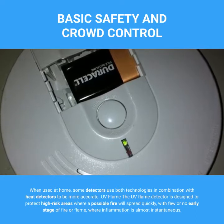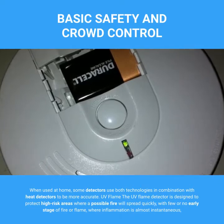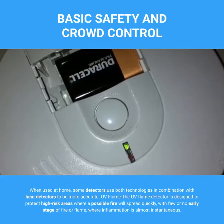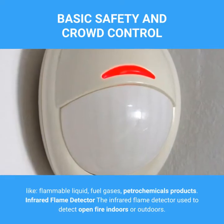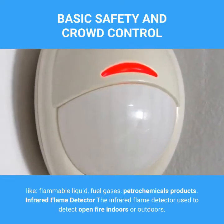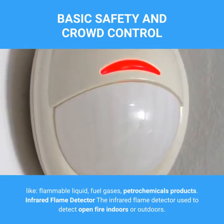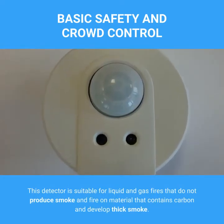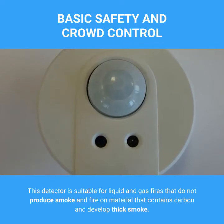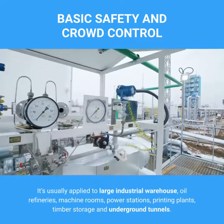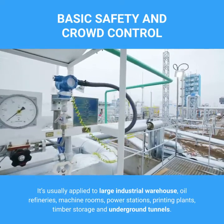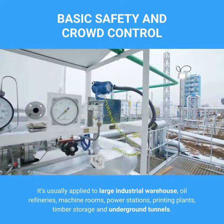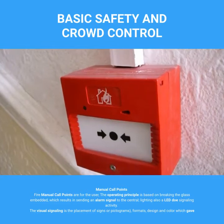UV flame detector: The UV flame detector is designed to protect high-risk areas where a possible fire will spread quickly, with few or no early stages of fire or flame, where inflammation is almost instantaneous — such as with flammable liquids, fuel gases, and petrochemical products. Infrared flame detector: The infrared flame detector is used to detect open fire indoors or outdoors. It is suitable for liquid and gas fires that do not produce smoke and fires on material that contains carbon and develops thick smoke. It is usually applied to large industrial warehouses, oil refineries, machine rooms, power stations, printing plants, timber storage, and underground tunnels.